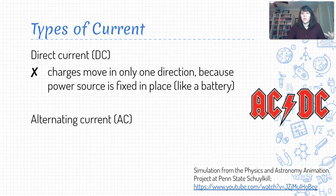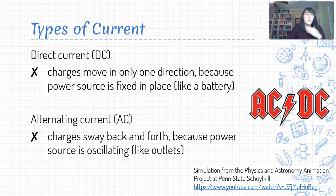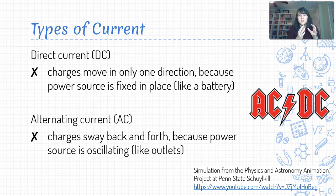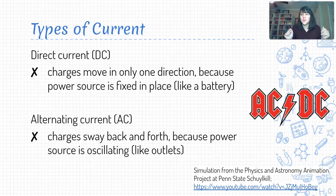The other alternative is alternating current, or AC. With alternating current, the power source is oscillating back and forth. This is how our power grid works — we don't have just a set voltage in place. Instead, we have this oscillation of charges moving one way, then the other way, then back again. So our current goes this way, then the other way, then this way again.